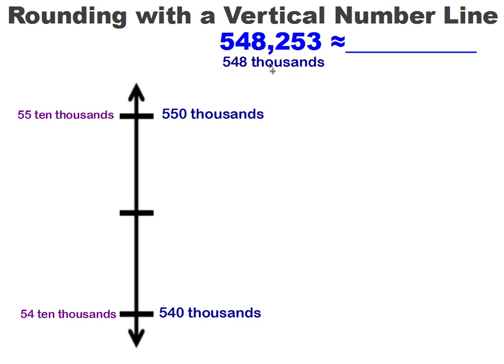So my 548 thousands is going to fall somewhere between these two amounts. I need to find the midpoint between 540,000 and 550 thousands. I could count by thousands. 540,000, 541,000, 542,000, 543,000, 544,000, 545,000.